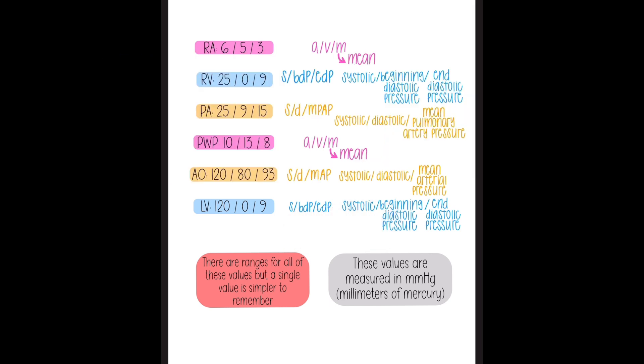Next up are the arterial pressures. So pulmonary artery and AO, aortic pressure, systolic, diastolic, and a mean of some kind. So for the PA, it's MPAP, mean pulmonary artery pressure. And for the AO or systemic pressure, it's mean arterial pressure or MAP.